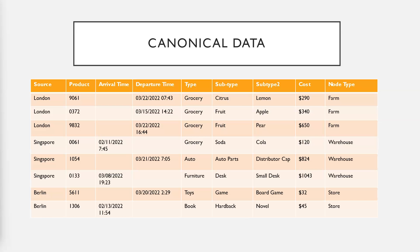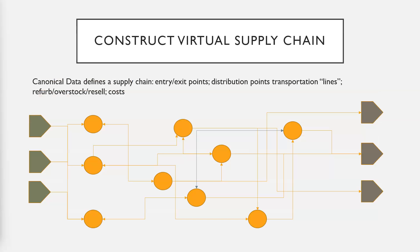From that data we can reconstruct a virtual supply chain without having to know the exact path of a specific product. We just know the flow — what's going into a node and what's coming out of a node.